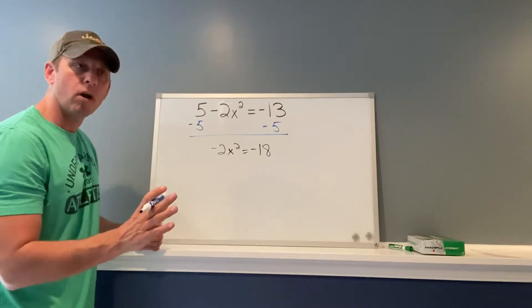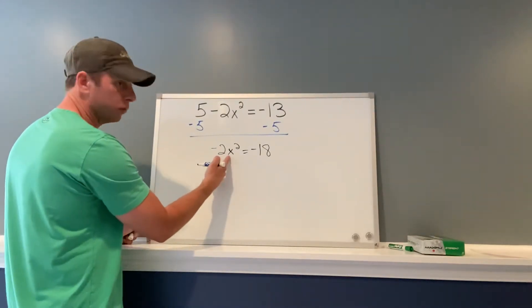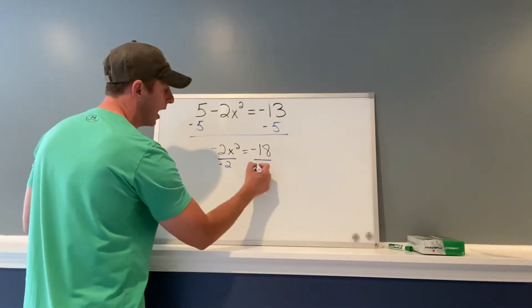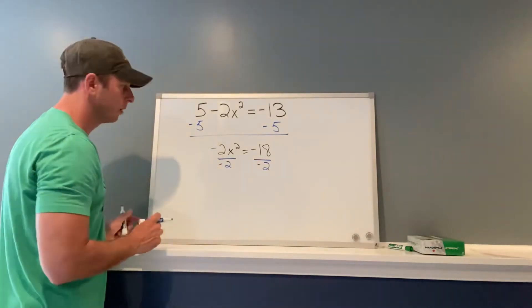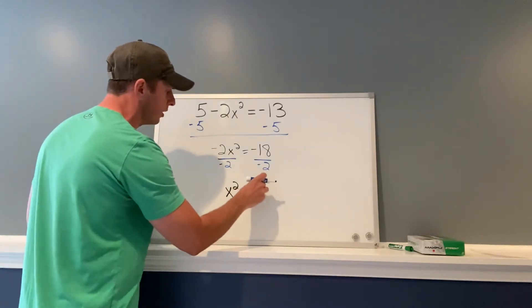Now we're going to multiply or divide to get our variable by itself. It's -2 times x², so we divide both sides by -2. Now we're going to be left with x² = 9.